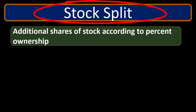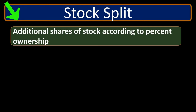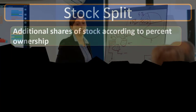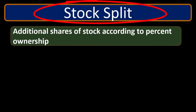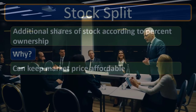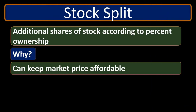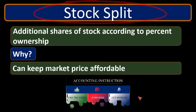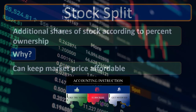Then we have the idea of a stock split, which is similar in some ways. A stock split means additional shares of stock are issued according to a percent of ownership. So a stock split provides more stock based on the ownership of existing stock — for example, a two-for-one or three-for-one stock split. The reasoning is similar: it can keep the market price in an affordable range. Note that the relative ownership of the company and therefore the voting rights should stay the same relative to other individuals.